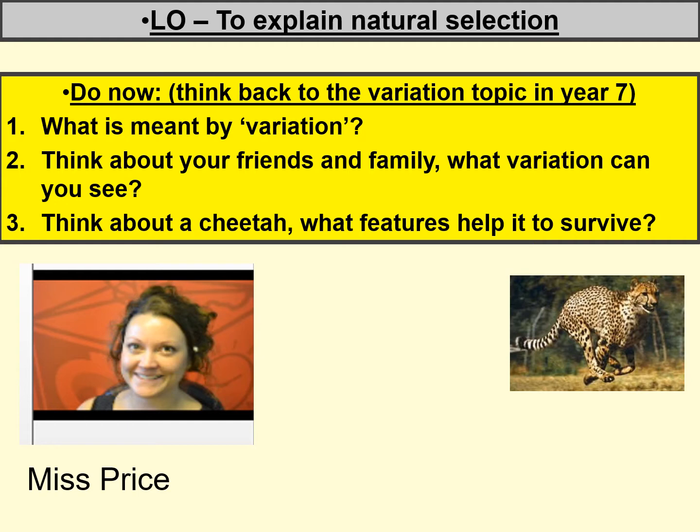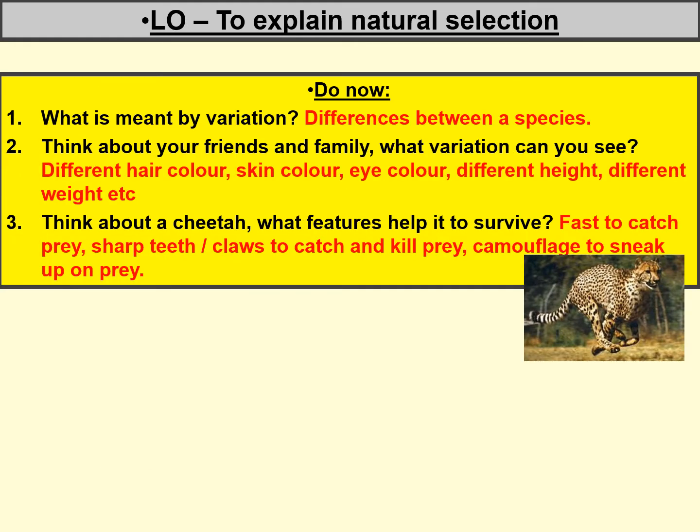We're going to mark that now. Variation is differences between individuals within a species, or differences between species. For friends and family, there's lots of variation in people — you could have said different hair colour, skin colour, eye colour, different height, different weight, different accents. The cheetah is very fast, it's got sharp teeth and claws to catch its prey, and very good camouflage so it can sneak up on its prey. Give yourself a mark out of three.